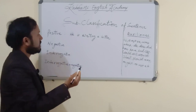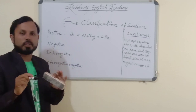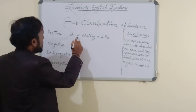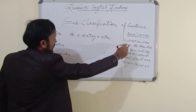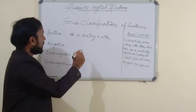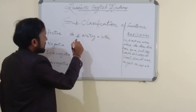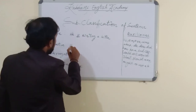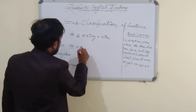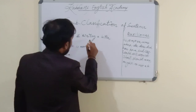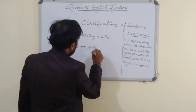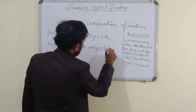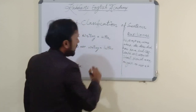How to make it negative? After auxiliary, 'not' will come. Which is the auxiliary, my dear? The list of auxiliaries is given. The auxiliary here is 'is.' So after 'is,' what can be used? Not. 'He is not writing a letter.' That is the negative sentence.